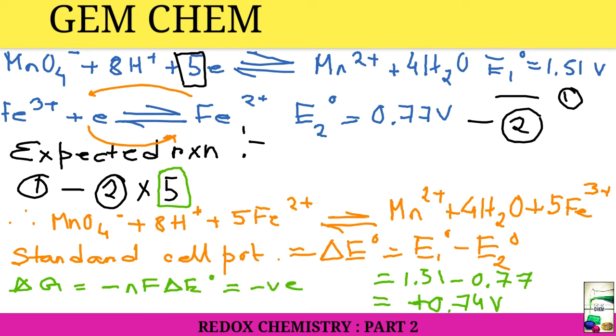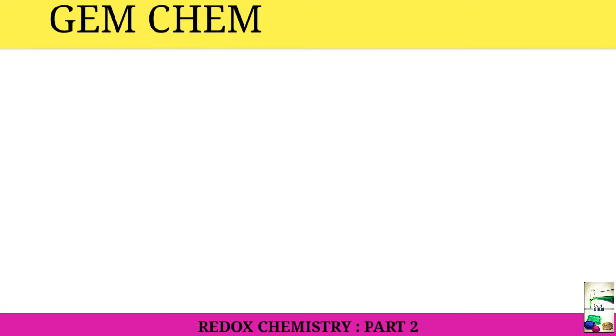And we know that ΔG = -nFΔE⁰ = negative. KMnO4 will be able to oxidize Fe²⁺ to Fe³⁺. Since the value of 0.74 is a positive number, on substituting this value here we will get a negative value of ΔG, so it is favorable.